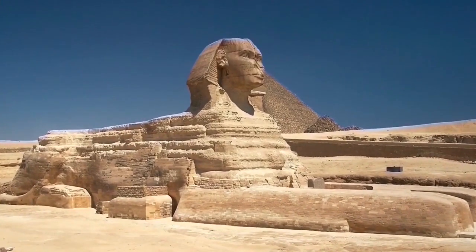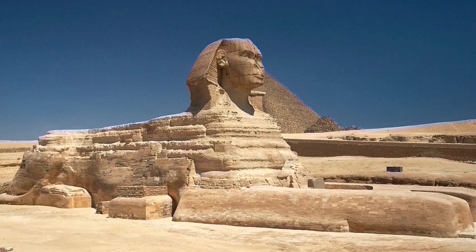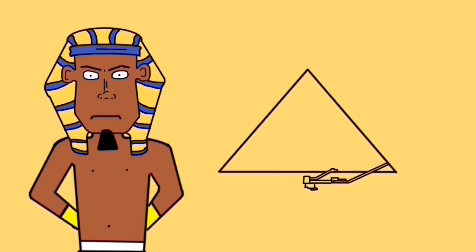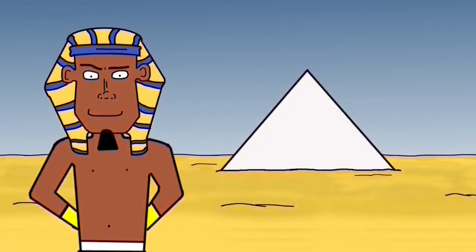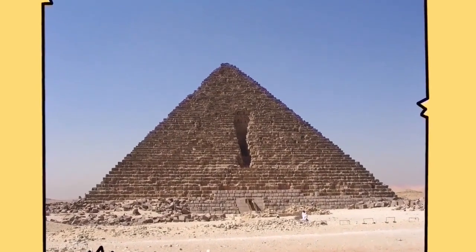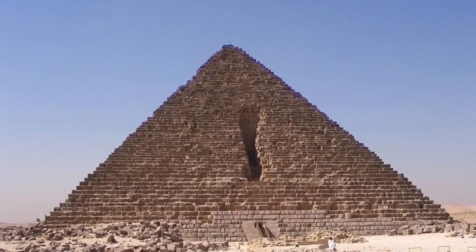Khafre's son Menkaure was the last pharaoh to build a great pyramid on the Giza plateau. Smaller than his predecessors, it does however complete the complex. Today it is still standing and is known as the Third Pyramid of Giza.